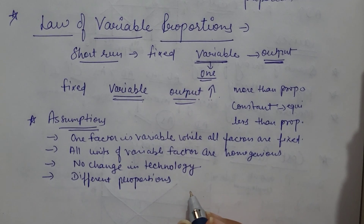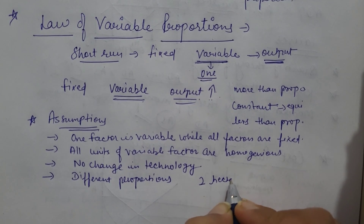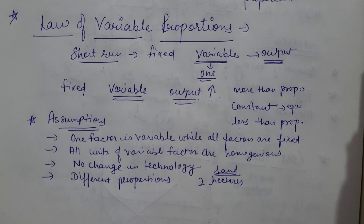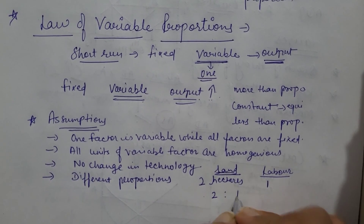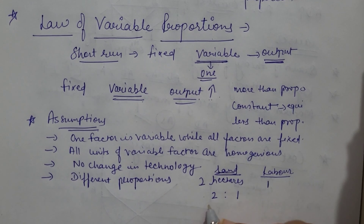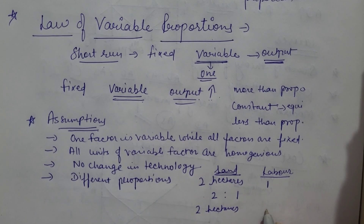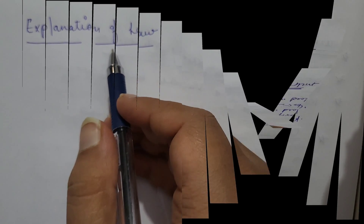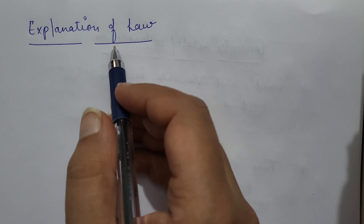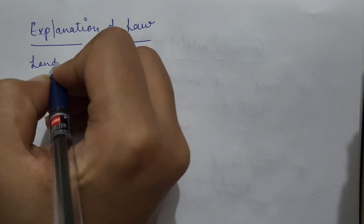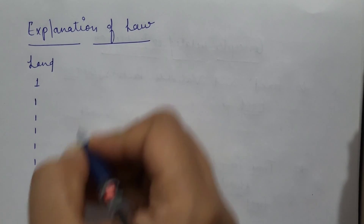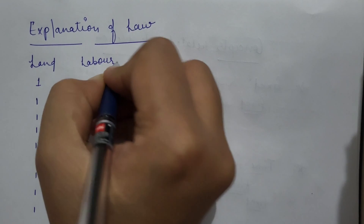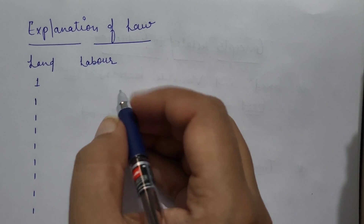For example, if a farmer is having two hectares of land, then land is the fixed factor of production and he employs only a single laborer there, so the proportion is two is to one. But if he increases the variable factor in order to increase production, then this proportion will change to two is to two. Now, the explanation of the law, which we will discuss with the help of a table as well as a diagram. Suppose our fixed factor is land — one hectare — and our variable factor is units of labor, which we will increase in order to increase production: one, two, three, four, five, six, seven, eight, and nine.